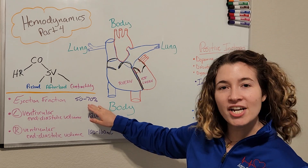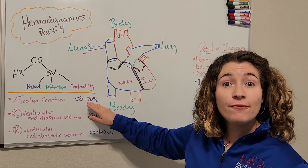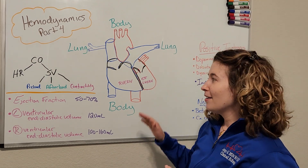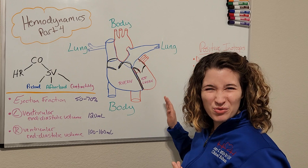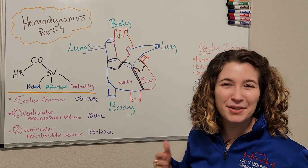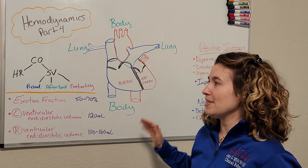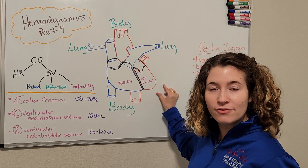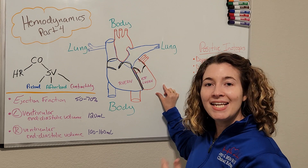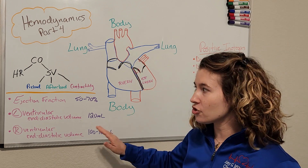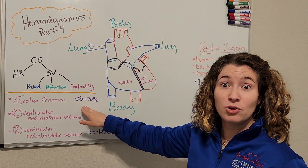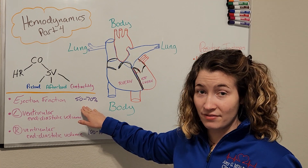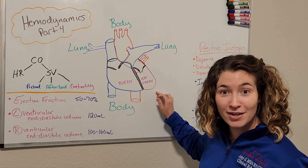Now a normal ejection fraction is between 50 and 70%. Now that surprises a lot of people because normally we would be thinking, wouldn't it be like a hundred percent of the blood that's pumped out with each beat? But no, actually there is going to be a decent amount of volume that's left in each of the ventricles after the contraction.